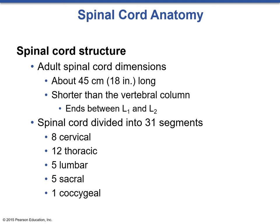The spinal cord itself actually ends between L1 and L2 of the vertebral column, but we use some of these same vertebral column segment names to signify spinal cord segments. The spinal cord is divided into 31 segments: eight cervical, 12 thoracic, five lumbar, five sacral, and one coccygeal.